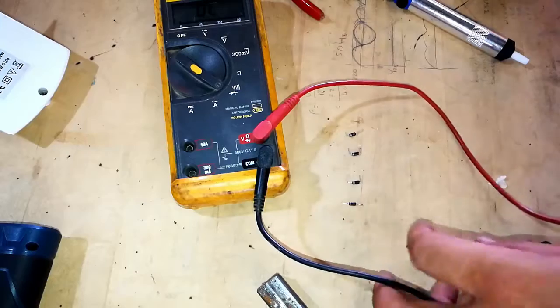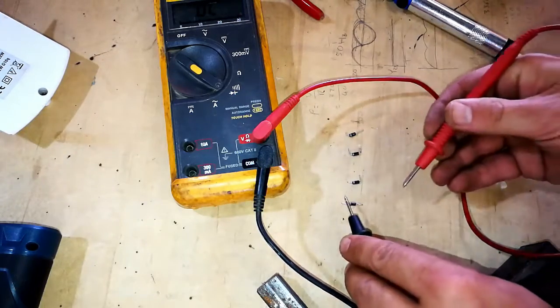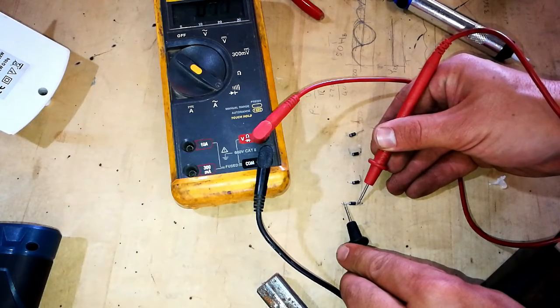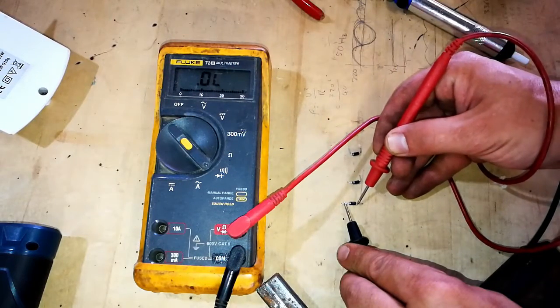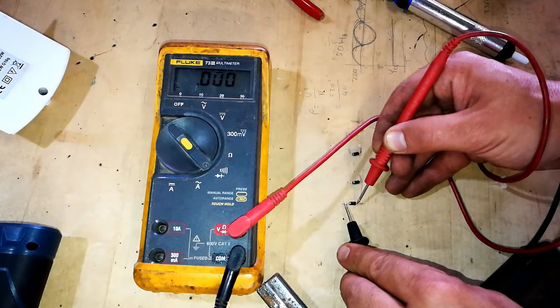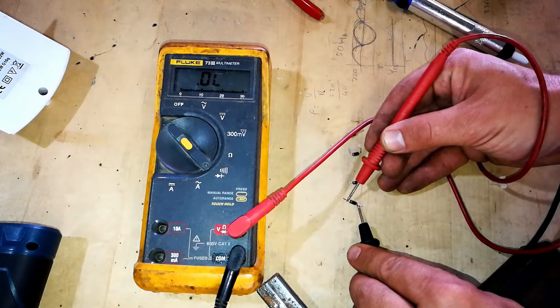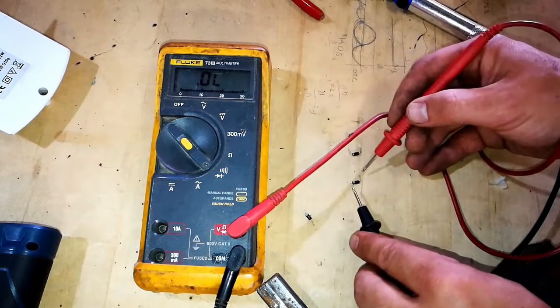Now, what we're going to do is, we're going to take our negative lead and put it on the negative side, the positive lead on the positive side. And there you hear it goes through. Okay. If you reverse this, no current should flow through it. And yet it does. So, this diode is damaged.